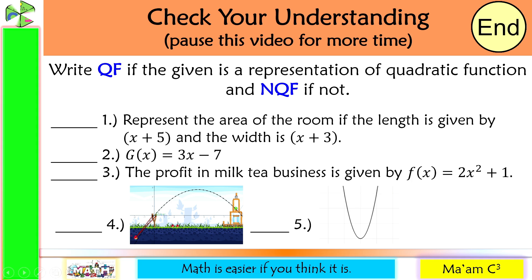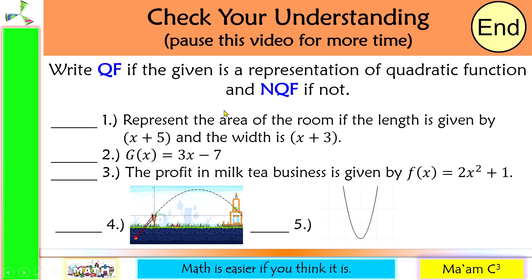Write QF if the given is a representation of a quadratic function, and NQF if not. Number one: the area of a room where length is (x + 5) and width is (x + 3). To find area, multiply length by width — x times x gives x squared, so yes, this is a quadratic function.